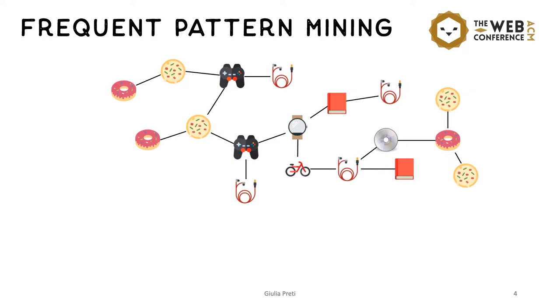A frequent pattern in this case can be this wedge, the donut pizza console, which appears three times in the graph.